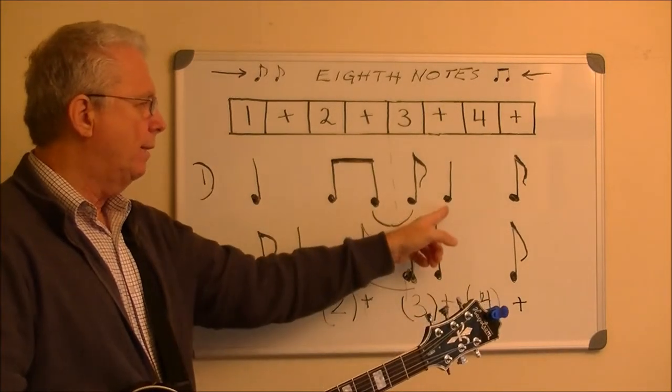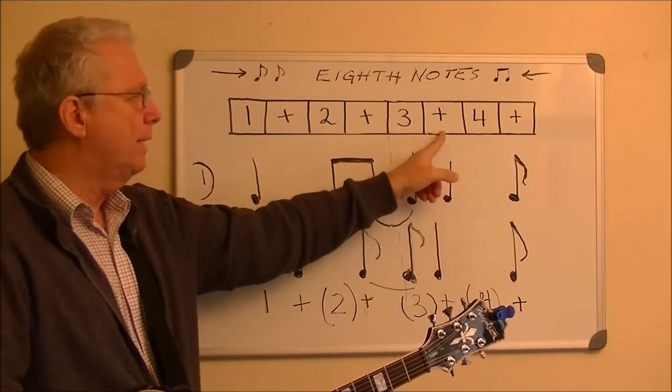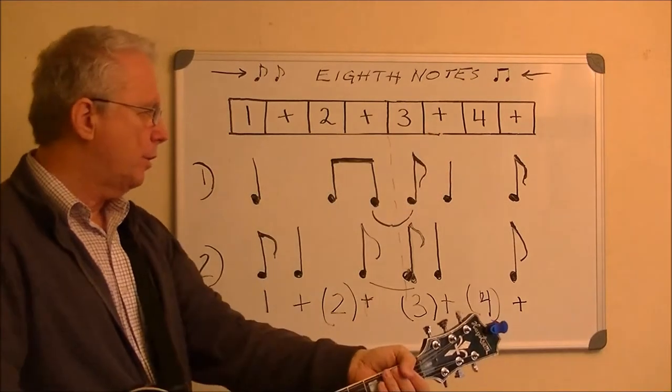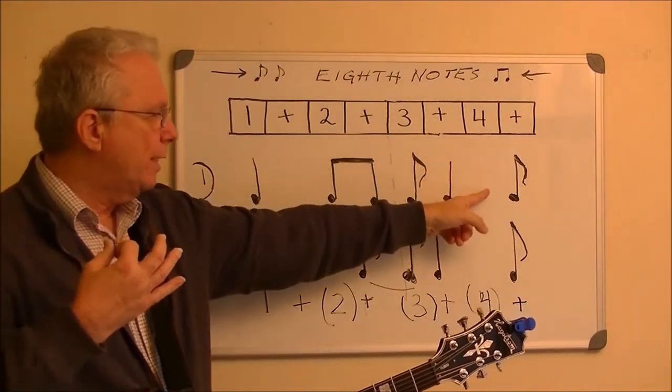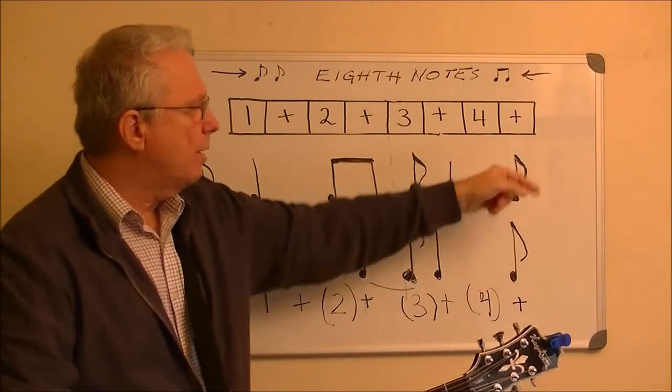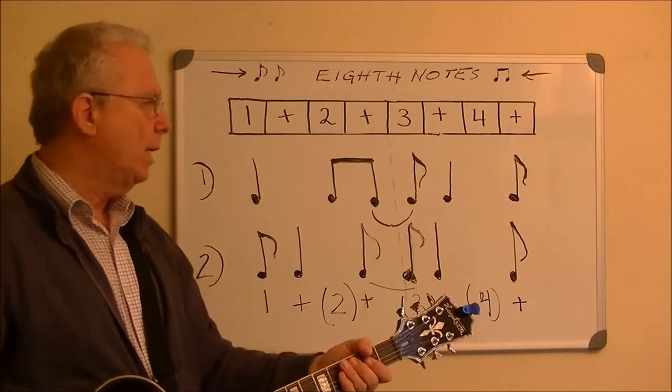And then my hand comes up on the strings on this quarter note, because it's on the and of three, so nothing happens on the four, so my hand skips the strings and then comes up on the strings for the and of four. Now with the tie.